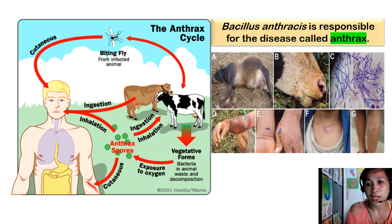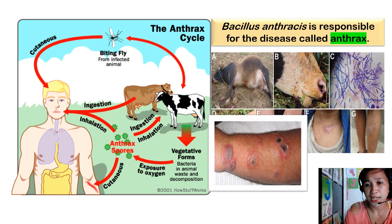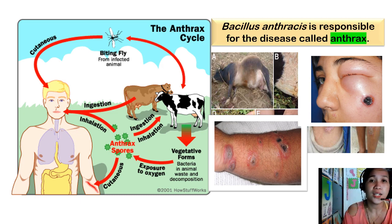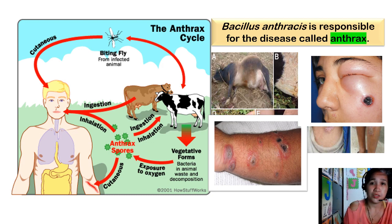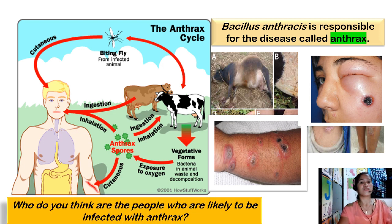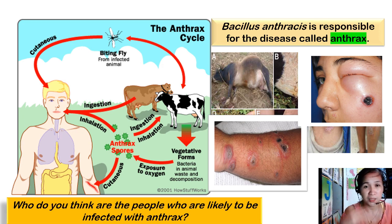It is strongly advised to refrain from eating meat of dead animals suspected to have died of anthrax. In the early 2000s, there was a worldwide threat of using anthrax spores to kill people in what is termed as biological warfare. Anthrax is more common in developing countries and countries that do not have veterinary public health programs that routinely vaccinate animals against anthrax. Who do you think are the people most likely to be infected with anthrax? Comment your answer in the comment box.